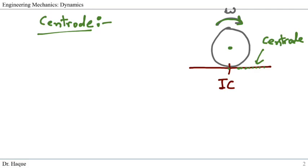Each point on the centroid acts as a potential IC for the rigid body at a given instant.